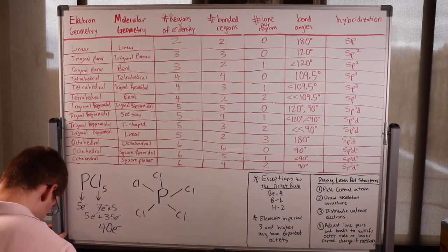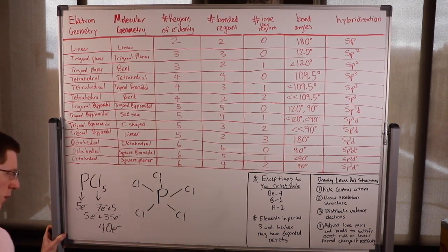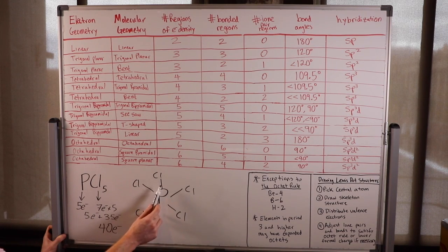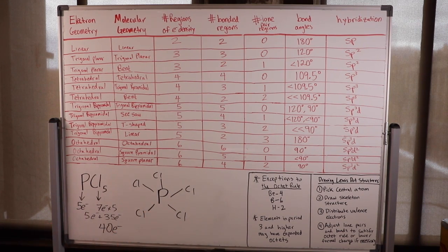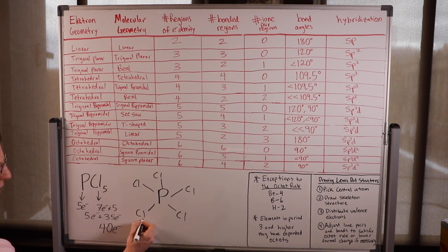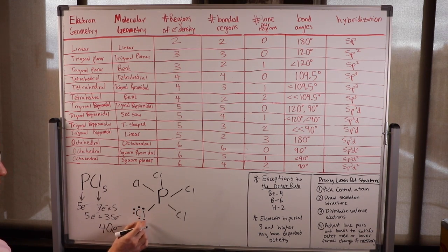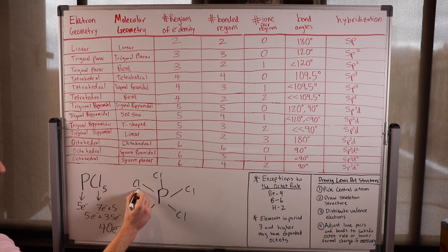We've already used a lot with these bonds: 2, 4, 6, 8, 10 — so we only have 30 left to work with. Let's start satisfying the valences of the outer atoms. They all need six electrons in the form of lone pairs to satisfy their octets.